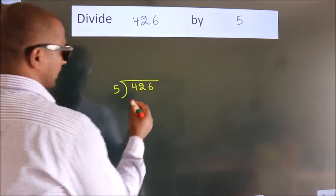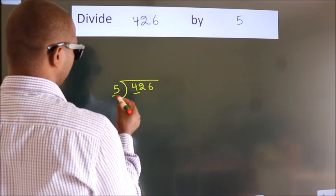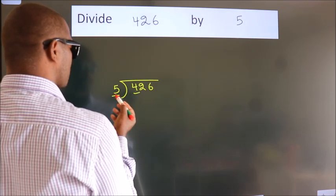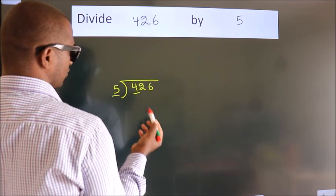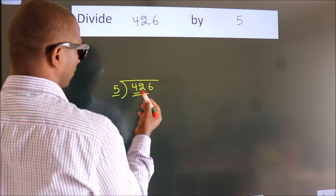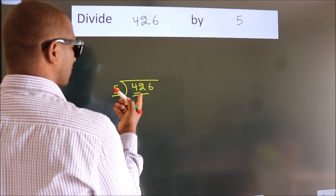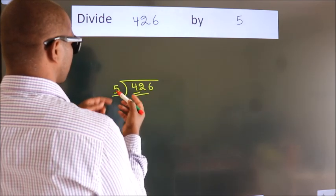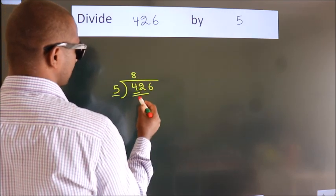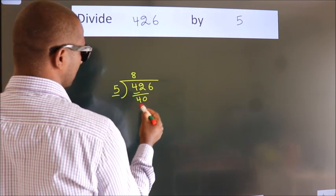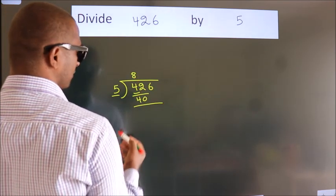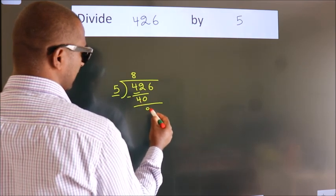Next, here we have 4, here 5. 4 is smaller than 5. So we should take 2 numbers: 42. A number close to 42 in the 5 table is 5×8=40. Now we subtract and get 2.